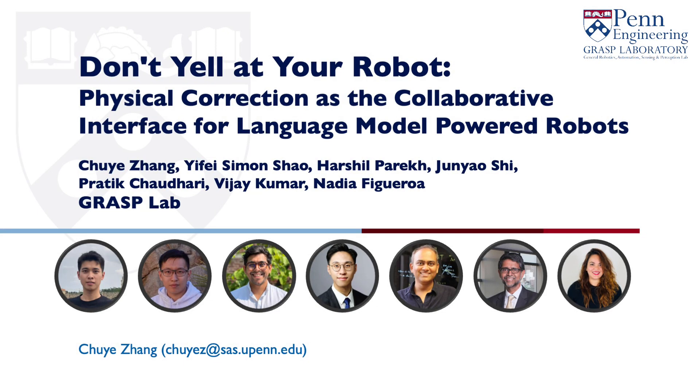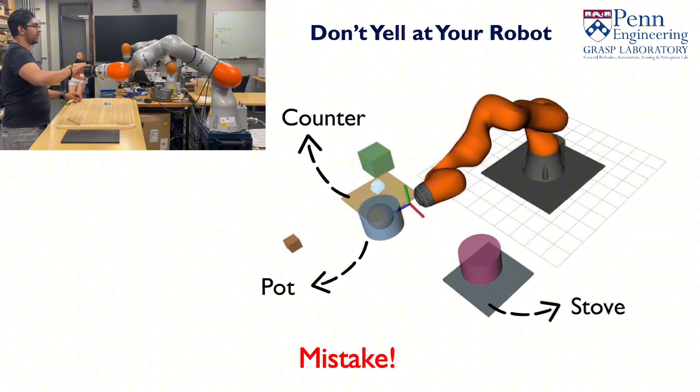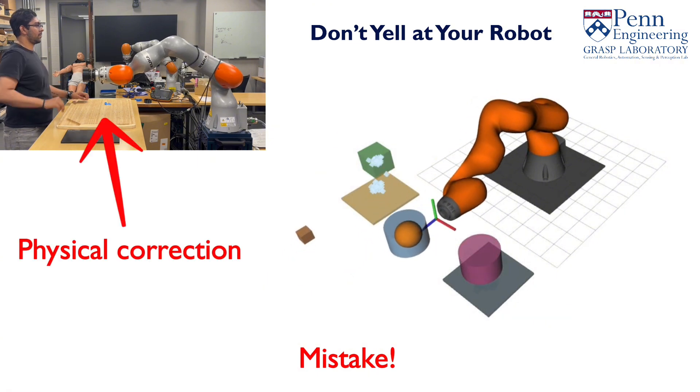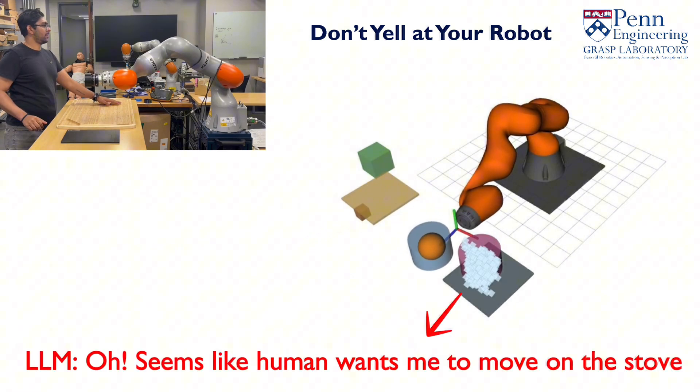We introduce a new method for real-time error correction of language-model-powered robots through physical interactions. Here, the LLM makes a mistake by moving the pot to the counter. As the human intends to move the pot to the stove, he physically pushes the robot, and the system records this correction.